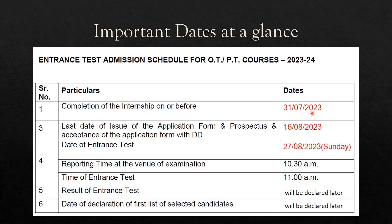All the important dates at a glance: complete your internship by 31st July; last date for application form issue is 16th August; entrance test date is 27th August; report at the venue by 10:30 AM; exam time is 11 AM; and results will be out within one or two weeks based on previous year's experience. The examination center is very near to the college — Lala Rajput Rai Commerce College — and the college is large, so don't worry about the atmosphere.